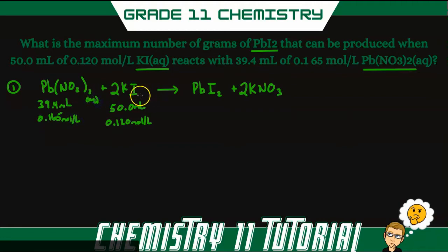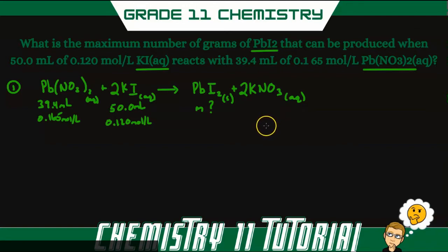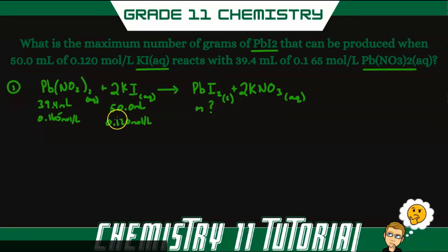Both of these are aqueous solutions, which is usually the case in a double displacement reaction. The question asks for the mass of lead iodide — lead iodide is a precipitate (a solid), whereas potassium nitrate is aqueous. You can determine this using the solubility table, which I cover in my reactions tutorial. To find the mass of lead iodide, we first need to determine which reactant is the limiting reagent.